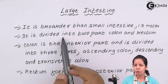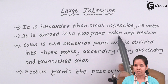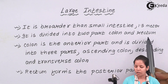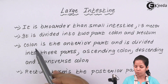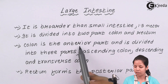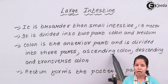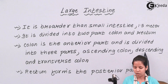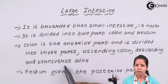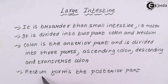The Large Intestine is divided into two parts: the colon and the rectum. The colon forms the anterior or internal regions of the Large Intestine and is internally divided into three different parts — the ascending colon, descending colon, and transverse colon. Below the colon region is the rectum, which forms the posterior part, or the outer part, of the Large Intestine.